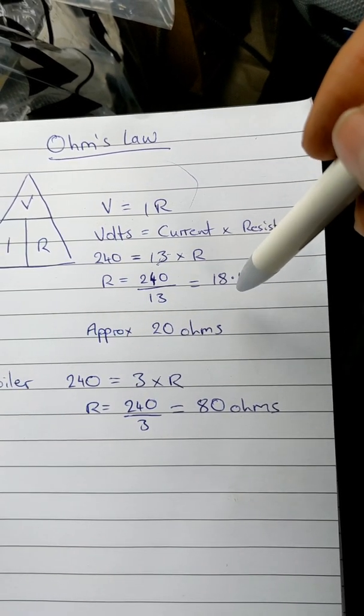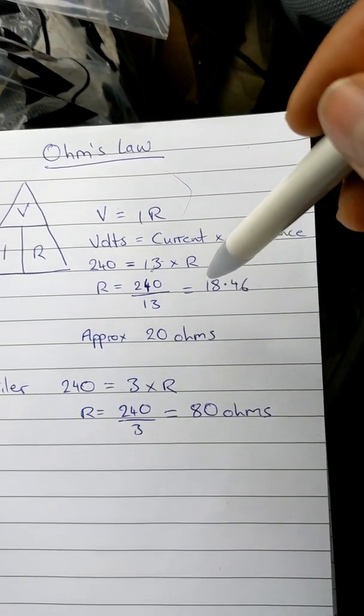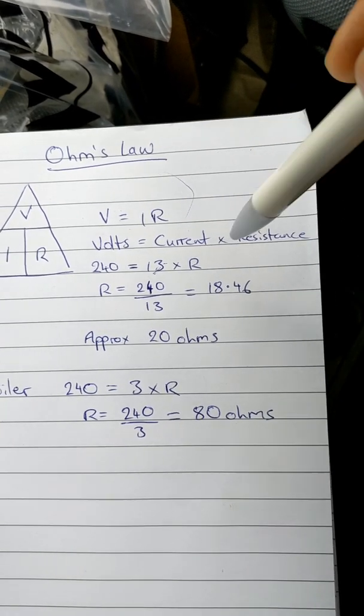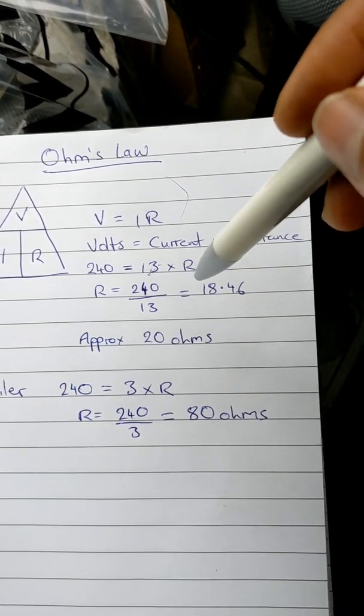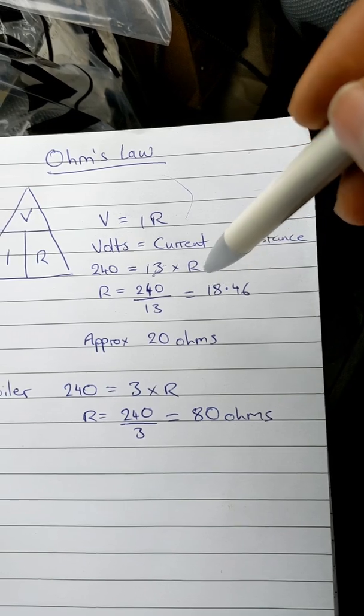If you're getting open line, or if you're getting mega ohms, or some weird values, then don't turn it on. It means that there's a potential short circuit within that appliance and it's not safe to use.